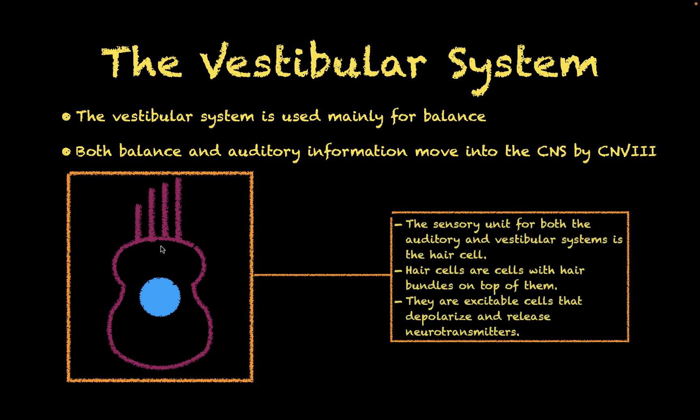The sensory functional unit for both the sense of balance and auditory sensation is going to be the hair cell. The hair cell is the sensory unit for both the auditory and vestibular systems. Hair cells are cells with hair bundles on top of them, and each hair bundle contains probably around 150 different hair fibers. These hair cells are going to be excitable cells that depolarize and release neurotransmitters.